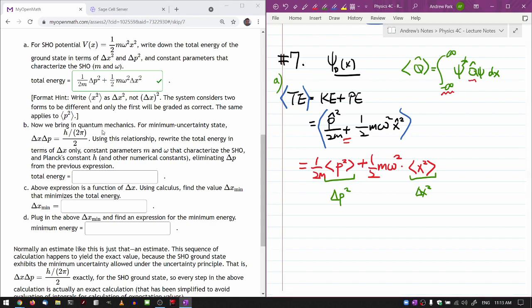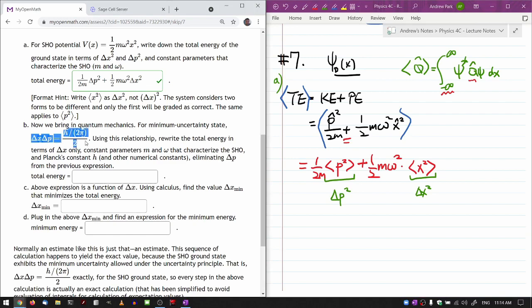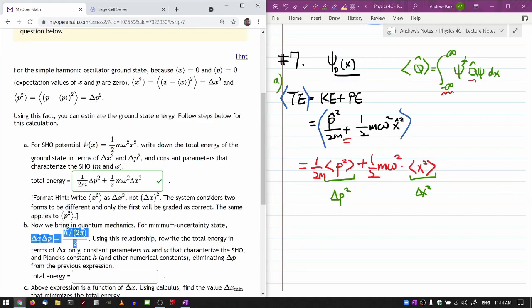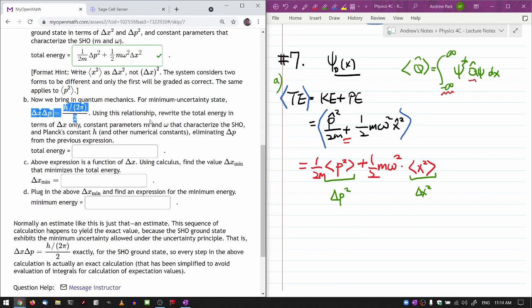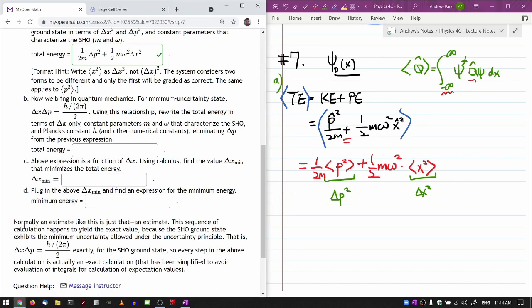Okay, it says now we bring in quantum mechanics. Anyways, for minimum uncertainty state, right, that is correct. And previously we derived, and do I repeat it here? Well, before in the previous question, we derived that for this ground state, it actually does obey this minimum uncertainty condition. So the calculation we are doing here won't... yeah. Don't expect it to hold for everything, but it does happen to hold for this particular state.